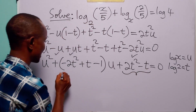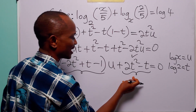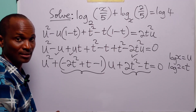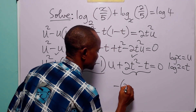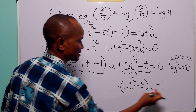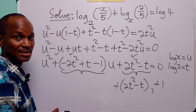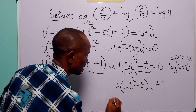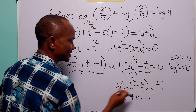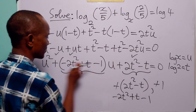We can factorize this quadratic. We need factors of 2t² minus t that add up to minus 2t² plus t minus 1. Those factors are (minus 2t² minus t) and (minus 1). When we add these: minus 2t² plus t minus 1, which confirms the factorization. So we can write the quadratic as (u minus 2t² minus t)(u minus 1) equals 0, wait — (u minus (2t² minus t))(u minus 1) equals 0.